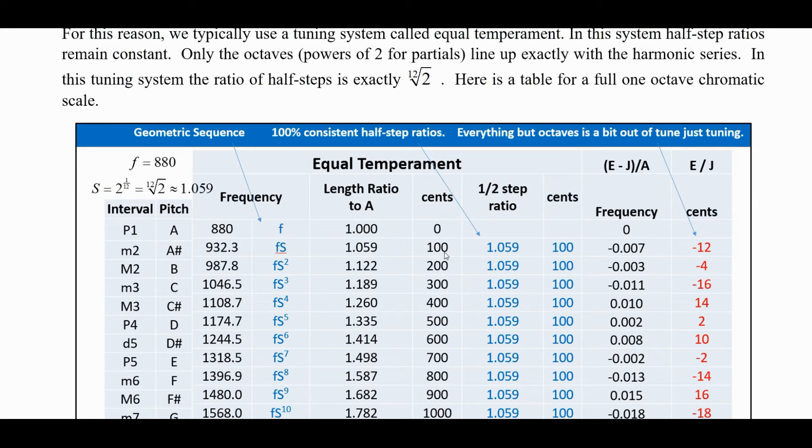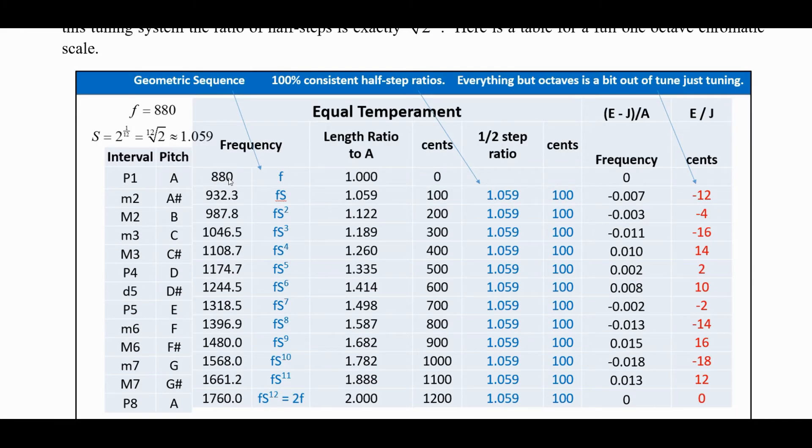So what we do instead is, instead of a harmonic series, we actually use a geometric series, or geometric sequence. What we do is we figure out a half-step as being, well, the fundamental idea is that when you double the pitch, you get the same note. So if the pitch one is 880 hertz for a particular A, then doubling that to 1760 hertz will give us exactly one other A.